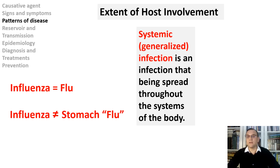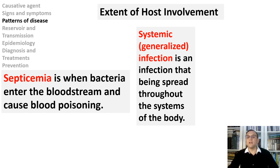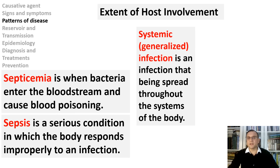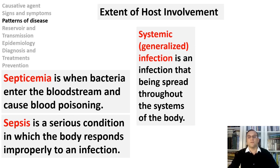Systemic diseases, such as influenza, affect the entire body. An infection that is in the bloodstream is called a systemic infection. Septicemia is when bacteria enter the bloodstream and cause blood poisoning, which can trigger sepsis. Sepsis is a serious condition in which the body responds inappropriately to an infection — the infection-fighting processes turn on the body, causing organs to work poorly. Sepsis may progress to septic shock, a dramatic drop in blood pressure that can damage the lungs, kidneys, liver, and other organs. Sepsis can result from bacterial, viral (such as COVID-19 or influenza), or fungal infections.